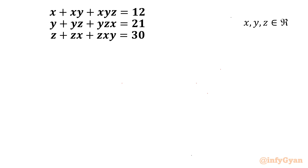Welcome back to Infigr, my dear friends. Today we are going to solve one very challenging and interesting system of equations from math Olympiads. The given equations are: x plus xy plus xyz equals 12, y plus yz plus yzx equals 21, and z plus zx plus zxy equals 30. We have to find out all real solutions.